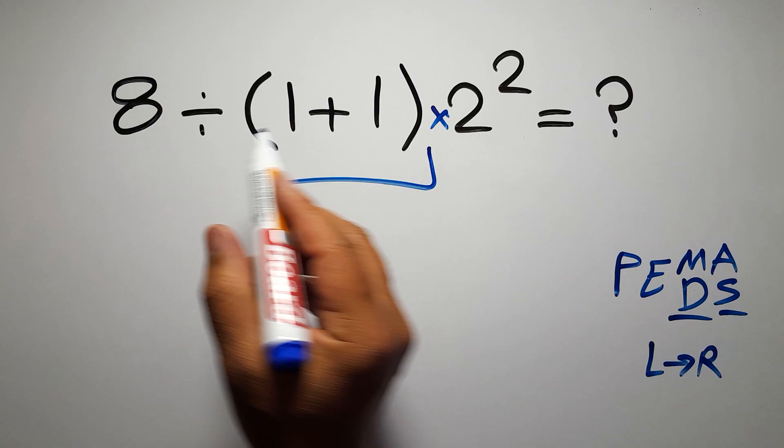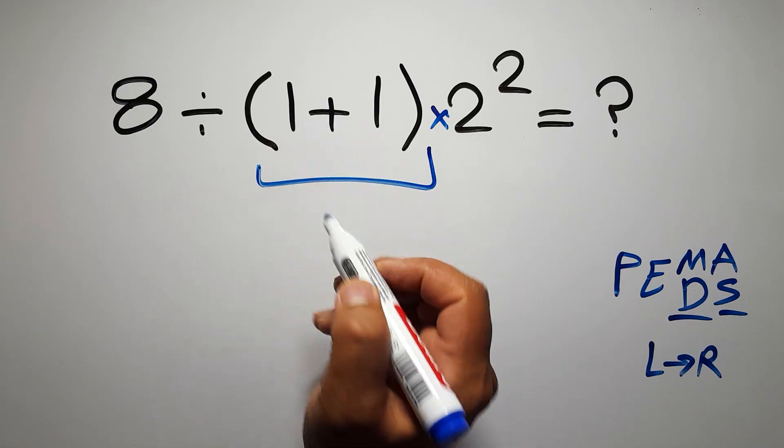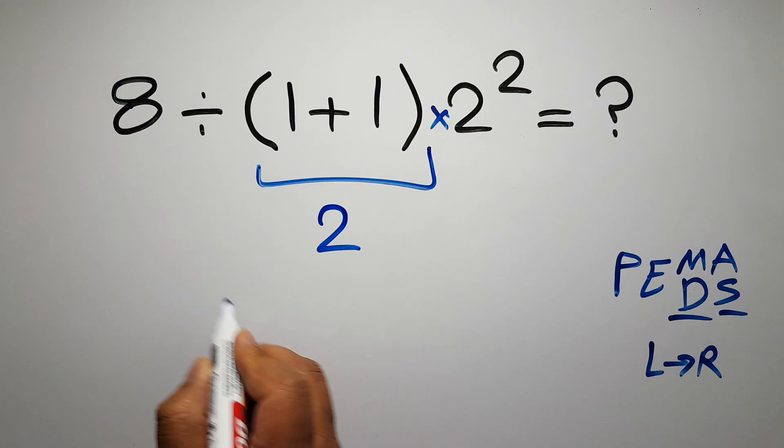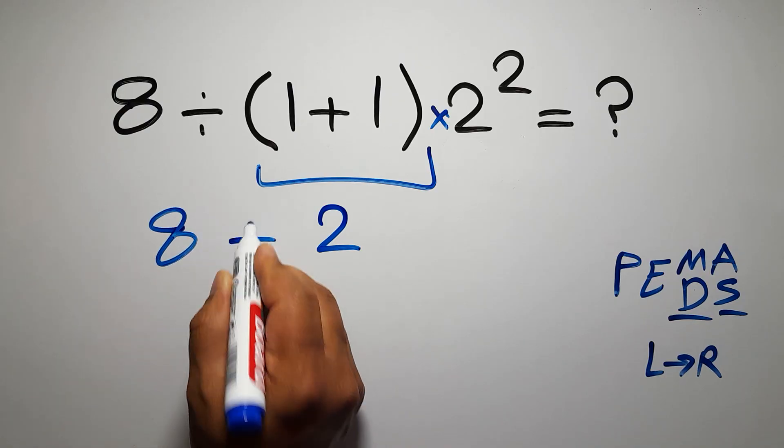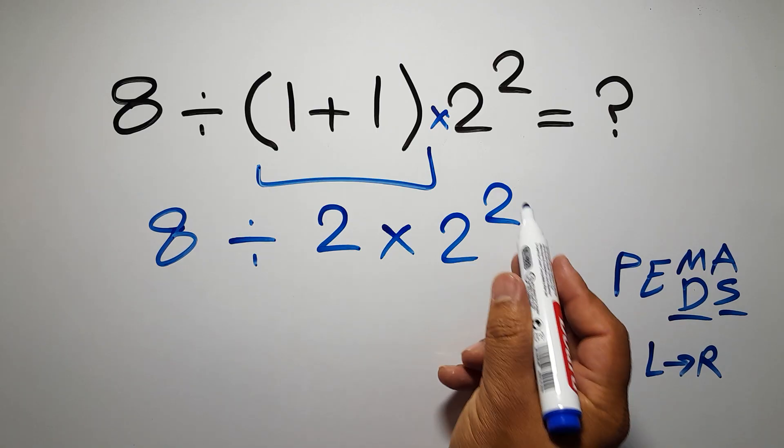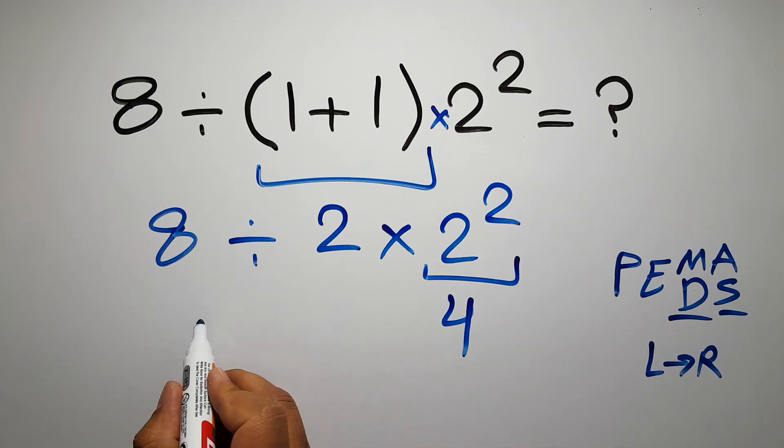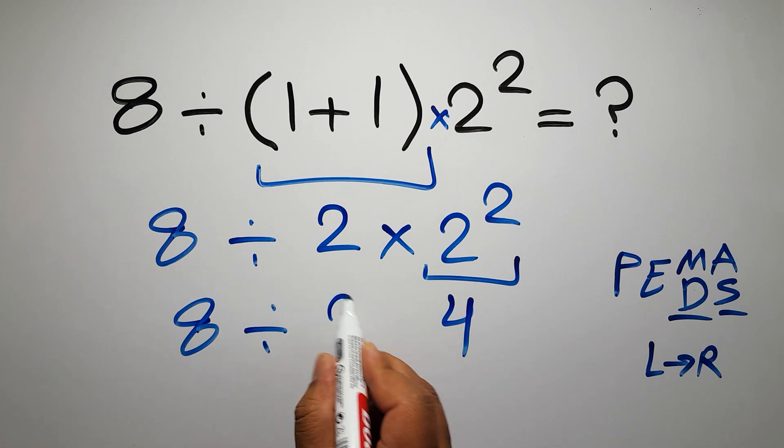So first, this parentheses: inside these parentheses we have 1 plus 1, which equals 2. So 8 divided by 2 times 2 squared. Now we have to do this exponent: 2 squared gives us 4, so 8 divided by 2 times 4.